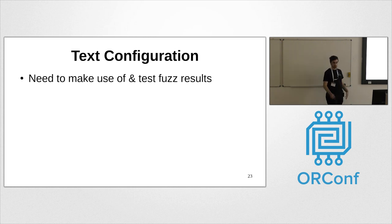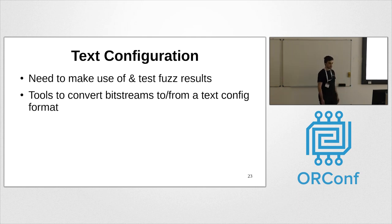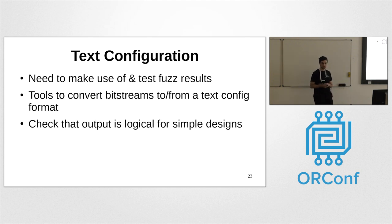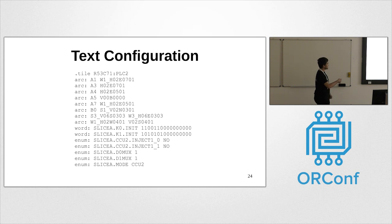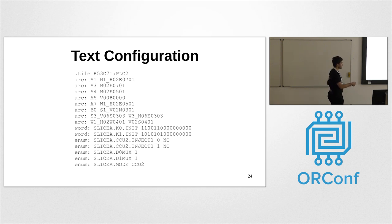We also need to take a bitstream and look at it as text to see how the fuzz results work on a real bitstream. The idea is tools to convert bitstreams to and from a simple text format. You can check output is logical for a simple design — create an inverter, verify LUT init bits, check routing makes sense. This also prints unknown bits, so you can create a large design and see if any bits weren't captured by fuzzing. In the text config, 'arc' means a connection between two wires, 'word' means a LUT init value, 'enum' means a text setting, and 'mode' specifies the slice mode — e.g., CCU2 for a carry slice.